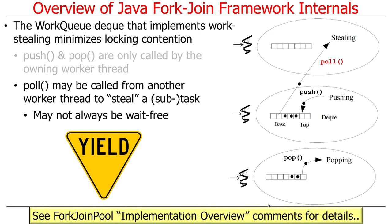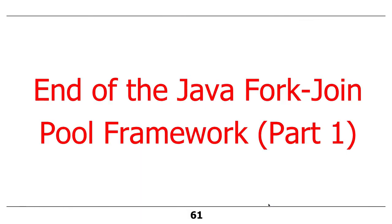The long and short of it is: as long as you've got work to do and cores to do it on, the ForkJoin pool implementation is going to be super efficient, and it'll try its best to balance all the processing over all the different cores on the machine. That is the end of the overview.